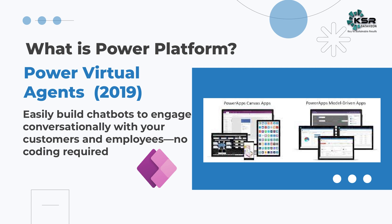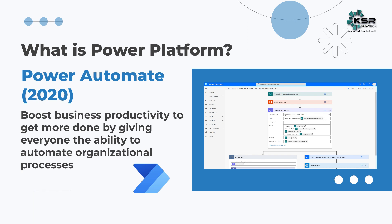Moving forward, we have Power Automate. Automate is a word most people are familiar with — it's about replacing manual work with automation. There are tasks which need automation and you can easily do them using Power Automate. For example, if you want to schedule a meeting on a daily basis, why do it manually? We have Power Automate. If you want to send reminders, we have Power Automate. Most of your manual processes can be automated, and this tool was launched during the Covid period in 2020.